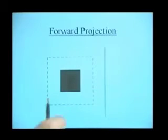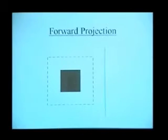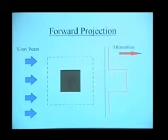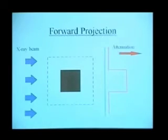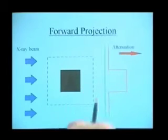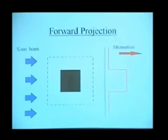Here we have a square object with uniform high attenuation. This is the imaging plane. If we irradiate the object with a parallel beam of x-rays from the left here, you can see that we have obtained an attenuation profile here. Outside of the object area, we have zero attenuation. Where we have the object, we have uniform high attenuation level.